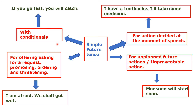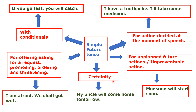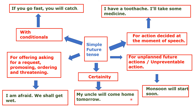Conditionals: 'If you go fast, you will catch.' Another example: 'My uncle will come home tomorrow.' There are five main usages of the simple future tense: unplanned action, natural events, predictions, speech acts like requests and promises, and conditional sentences.